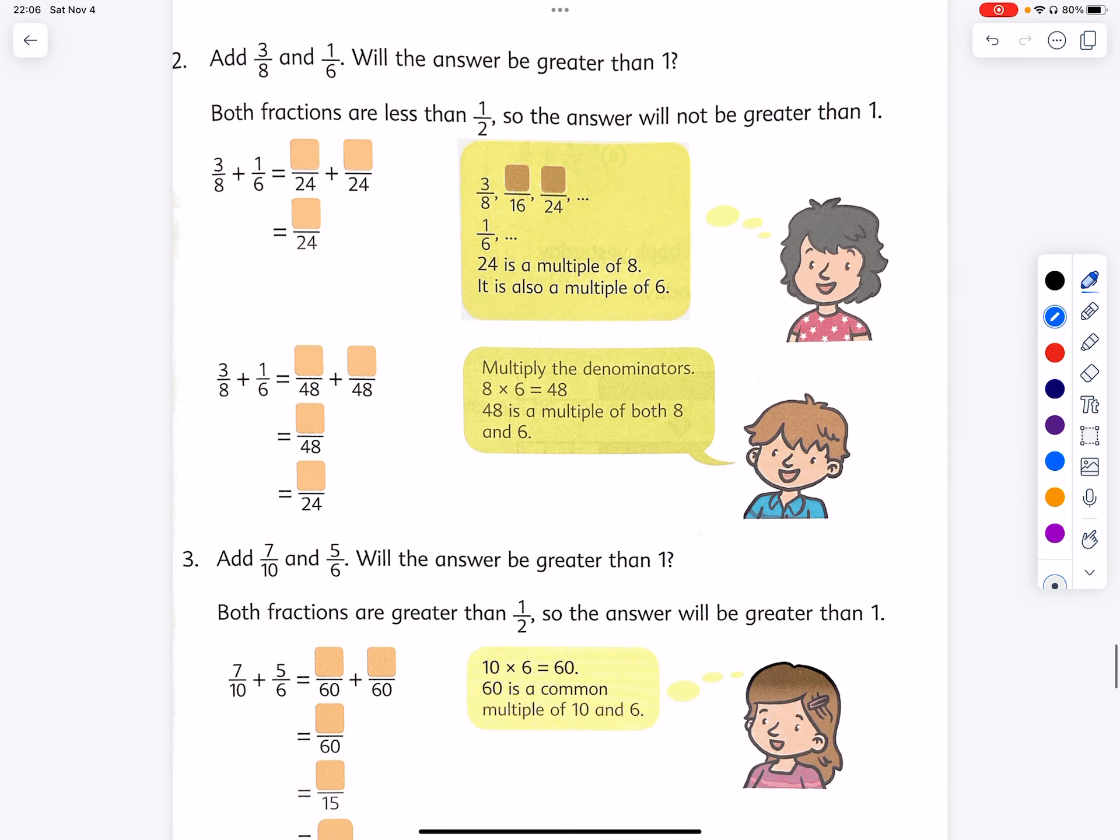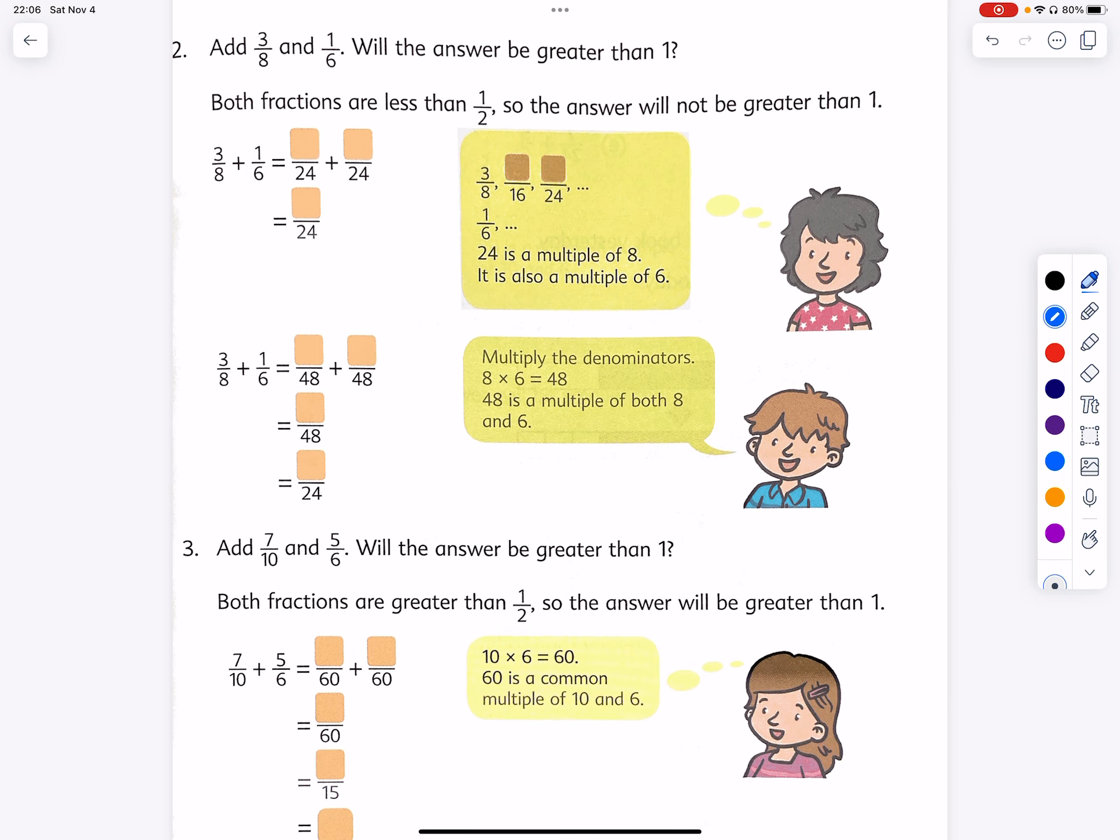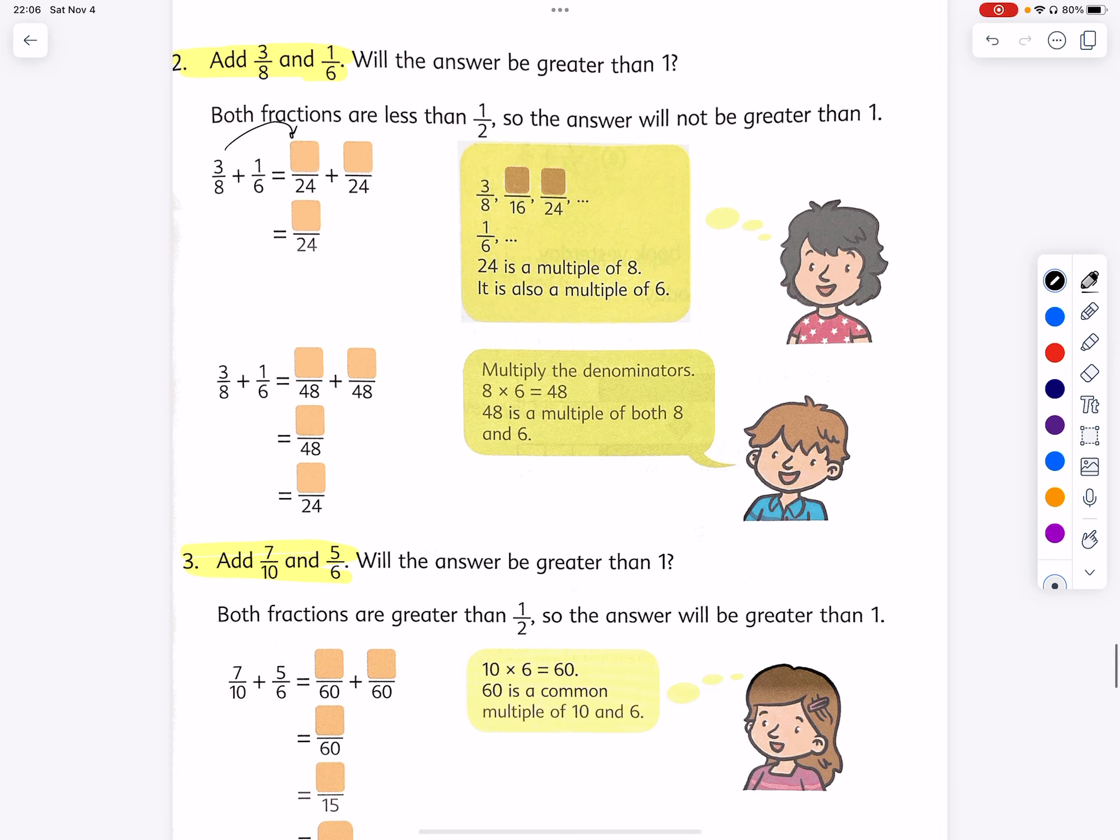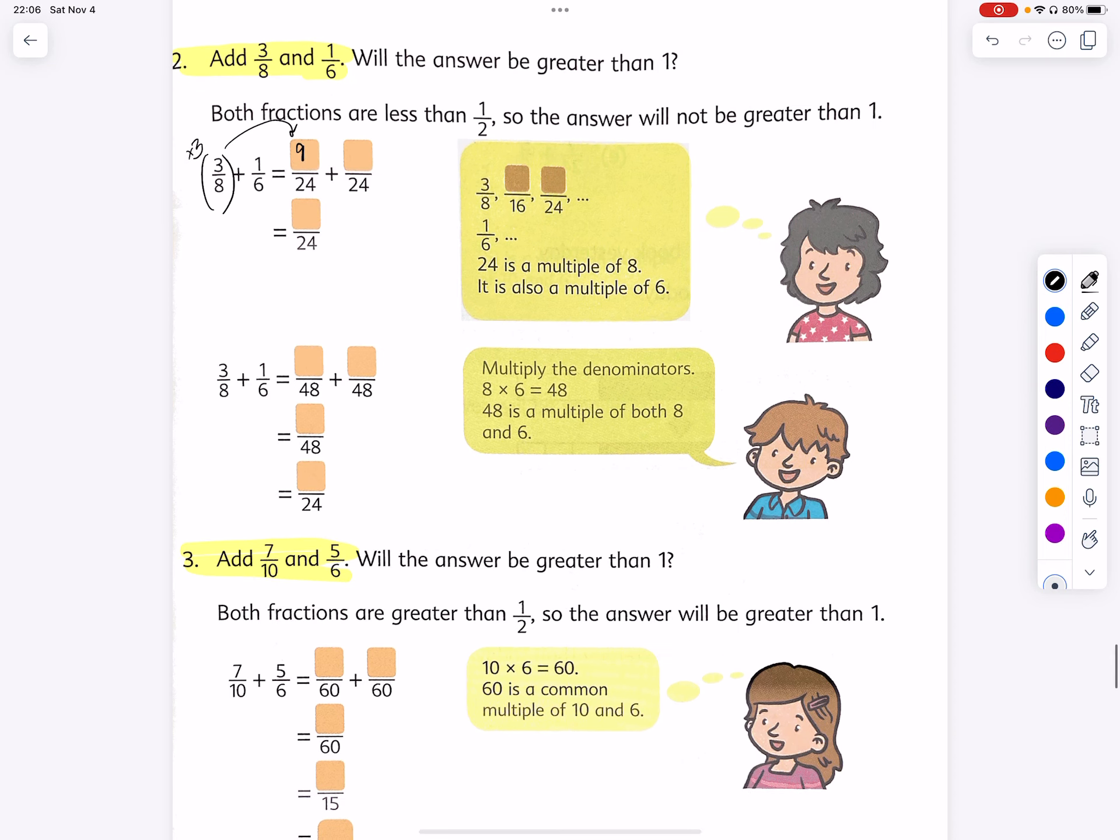Now we have additional examples on the following page, 67. Add 3/8 and 1/6. 3/8 and 1/6 are definitely not lookalikes, but the common multiple is 24. What's the equivalent of 3/8? We need to triple this fraction. 3 times 3 is 9, and 3 times 8 is 24. 1/6 - what is the equivalent? We need to quadruple it. It becomes 4/24. 9 plus 4 equals 13/24.